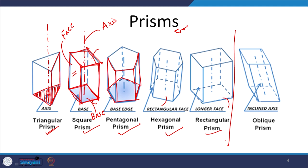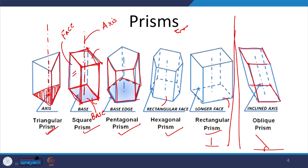Within prisms, we have two categories: one where the axis is perpendicular to the base, and the other where the axis makes a certain angle with the base — it is not perpendicular. In the oblique case, the top and bottom remain the same base shape, but each face instead of being a rectangle becomes a parallelogram.